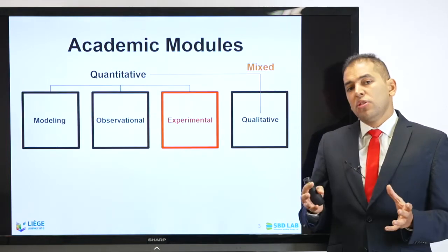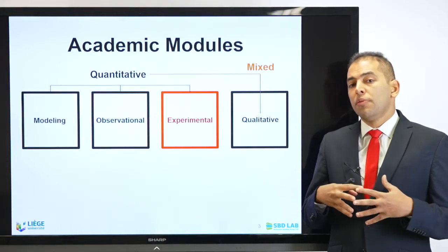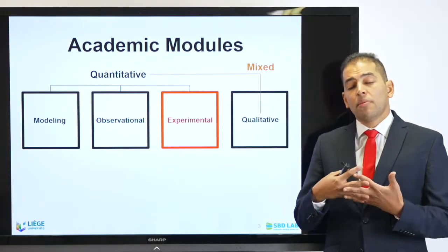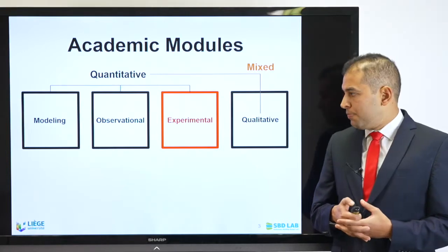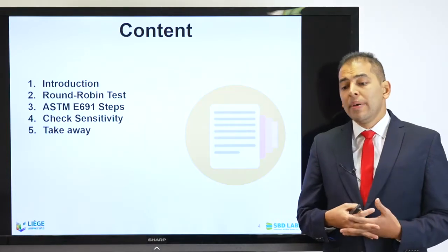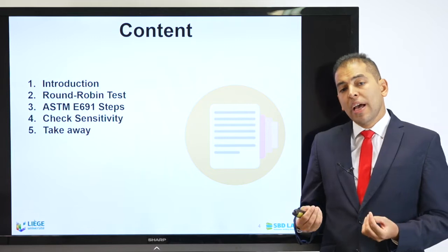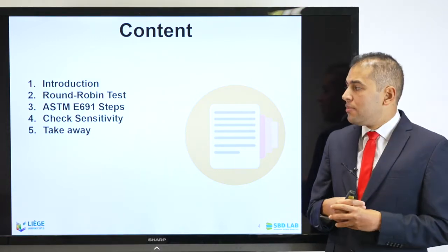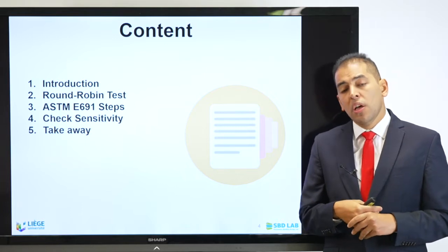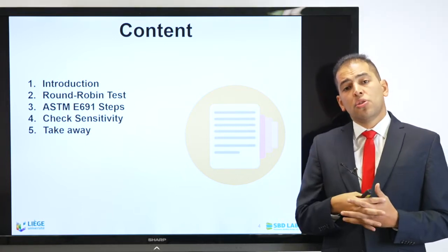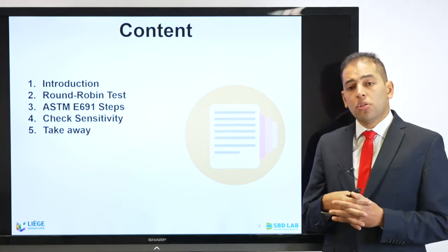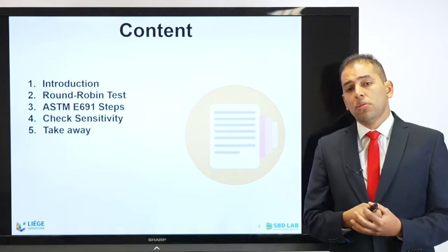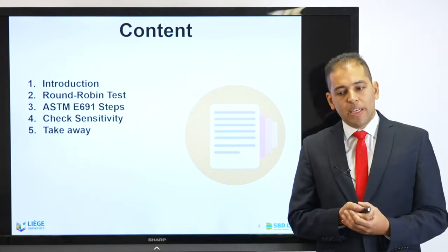Just to give you some context, this lecture is part of the experimental research methodology, and here I'm talking about a family of research that many of you are interested to work on. The content of today's presentation is mainly to introduce the round-robin test and to give a very short description of this test within the ASTM E100-691 characteristic description, and just a short discussion on the parametric rounds and sensitivity analysis that can be done within this round-robin test, and finally some takeaway messages.